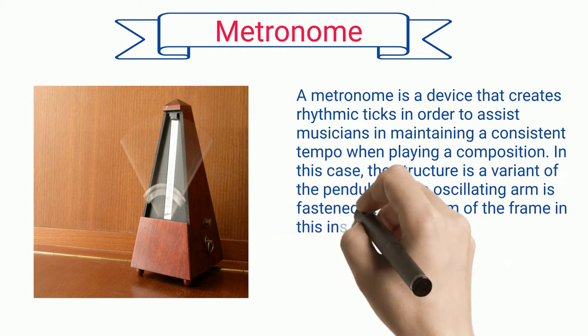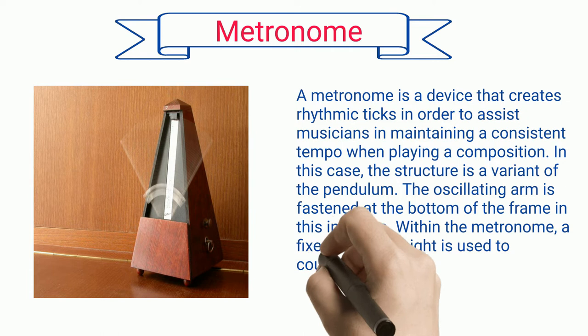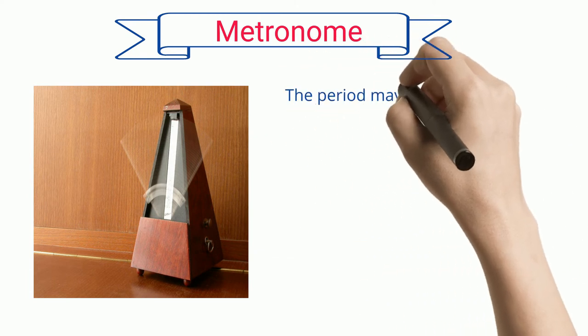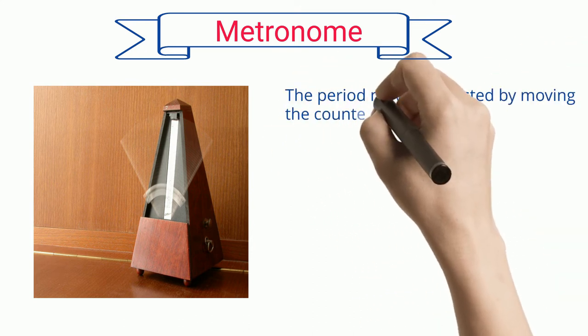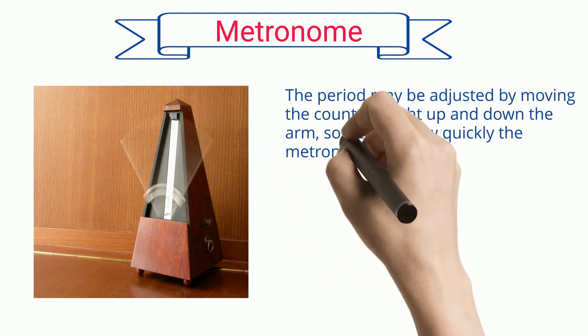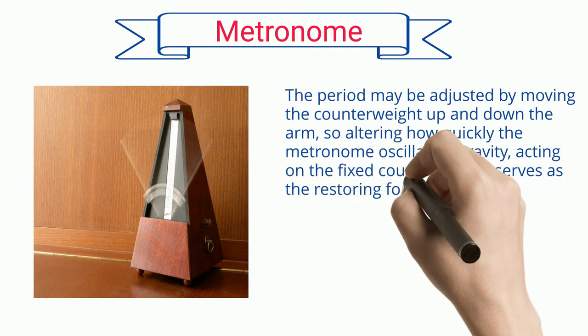Within the metronome, a fixed counterweight is used to counterbalance a second weight that is attached to the oscillating arm. The period may be adjusted by moving the counterweight up and down the arm, thus altering how quickly the metronome oscillates. Gravity acting on the fixed counterweight serves as the restoring force.